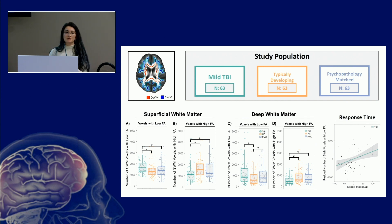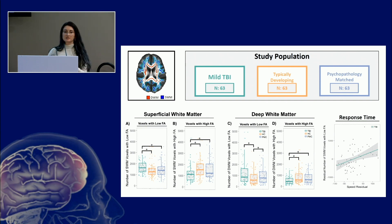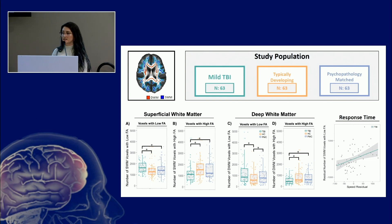When we look at our relationship with response time, we see a positive relationship between response time and the number of superficial white matter voxels with low FA, suggesting that the slower your responses to an attention task — the worse you perform — the more of this abnormality you have. You can come to my poster for more questions.